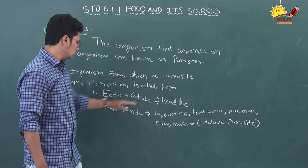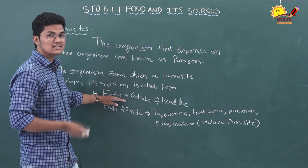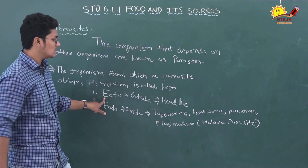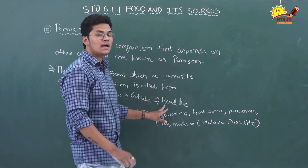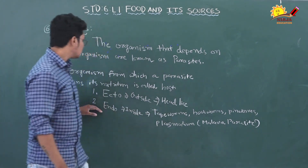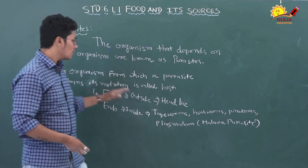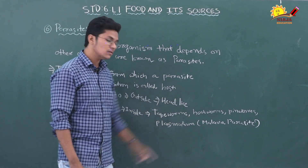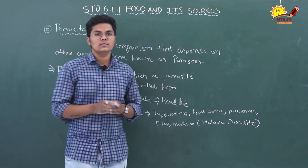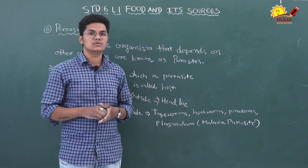There are two types of parasite: ecto parasite and endo parasite. Ecto means outside and endo means inside. Parasites that live outside of an organism are known as ecto parasites — for example, mosquito and head lice, which suck blood from the head. Endo parasites live inside an organism — for example, tapeworms, hookworms, pinworms, and plasmodium, which are malaria parasites. The parasite draws nutrition from the host and causes harm to the host.